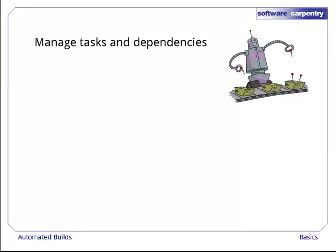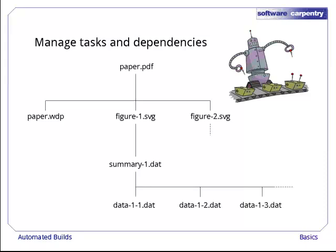To illustrate how it works, here's the dependency tree for the paper that the robot is working on. Paper.pdf depends on paper.wdp, the raw word processor file, and on figure1.svg and figure2.svg.